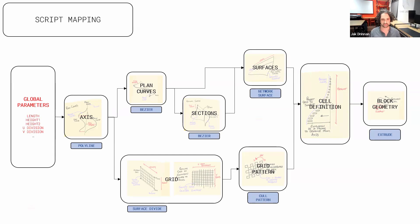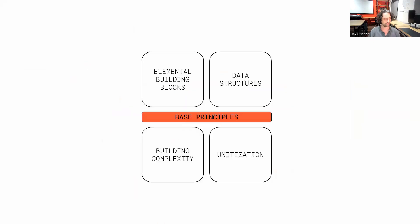So from a simple set of sketches and some base principles of how we script things, what we've given rise to is a map with a direction to it. It's not perfect, and we're not scripting anything yet — we're just mapping out a direction to our scripting so we don't get lost and miss our way.